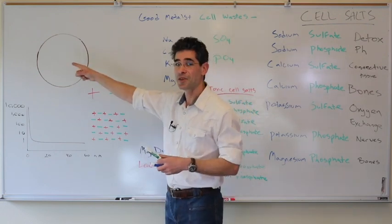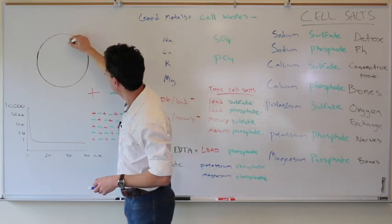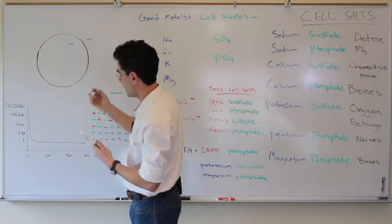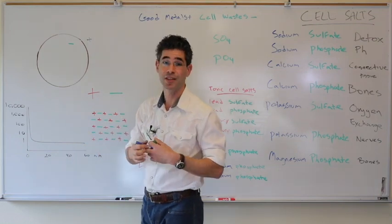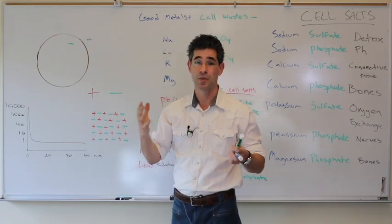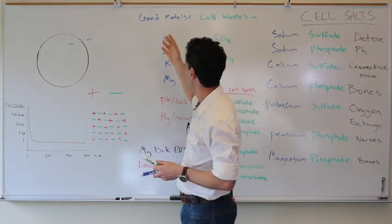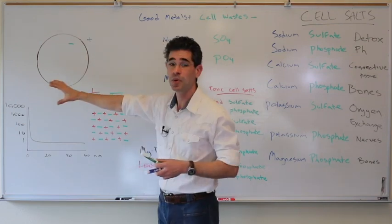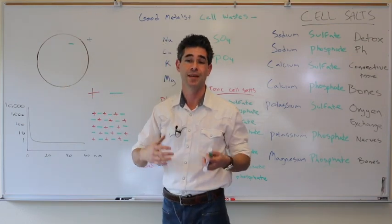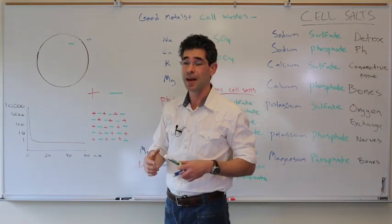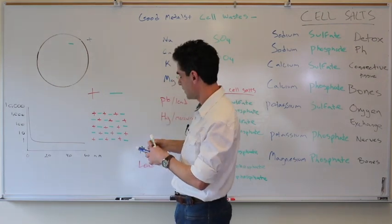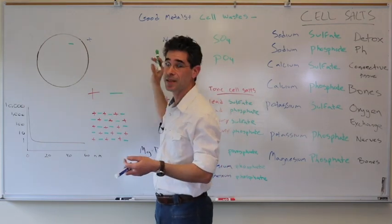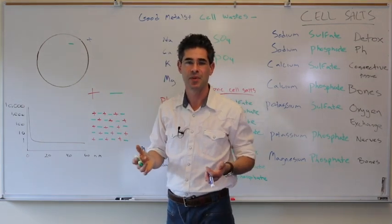So here's our cell. The cell likes to be negative on the inside and positive on the outside, and that gives it its charge, its ability to do what it needs to do. Now metals tend to be positive, and when the cell's negative on the inside it can pull the metals it needs like calcium and zinc. Then the metabolic wastes it makes are also negative, and since negatives repel, it can push the wastes out. It's a very simple and elegant design.